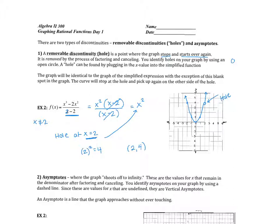If you were to use your graphing calculator and look at the table of values, at x equals 2 it would say error. Your graph is telling you that something's happening when x is 2 — specifically it's a hole, because we have a factor that you can remove from both the numerator and the denominator.